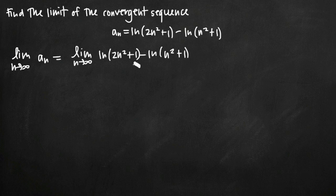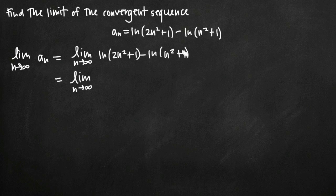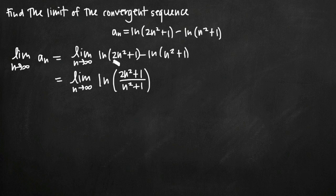One thing we can do is combine these natural log values. This is a property of logarithms: when we have the natural log of one value minus the natural log of another value, the second value becomes the denominator and the first becomes the numerator. So what we get is the natural log of the quantity 2n squared plus 1 divided by n squared plus 1, combining the two using that law of logarithms.